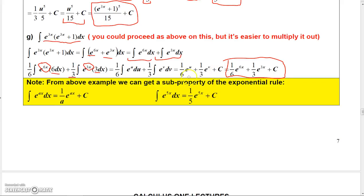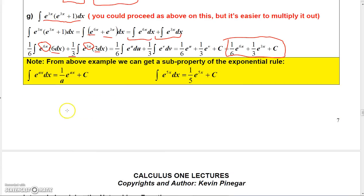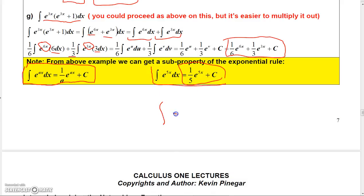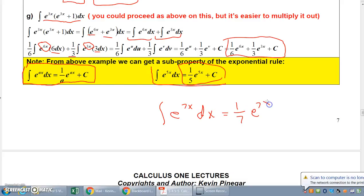There's a useful property: anytime you have e to the ax dx, that equals 1 over a times e to the ax plus a constant. For example, the integral of e to the 5x dx is just 1/5 e to the 5x plus a constant. So anytime you see e to some constant times x that you need to integrate, like e to the 7x dx, the integral is simply 1/7 e to the 7x plus a constant.